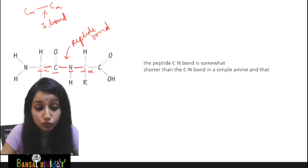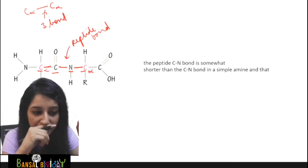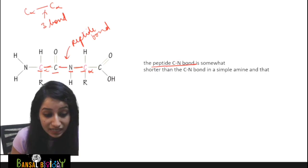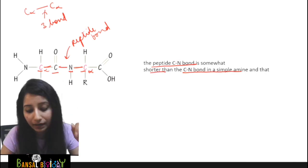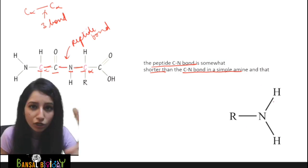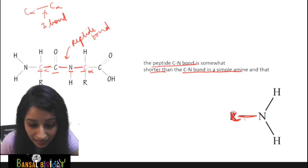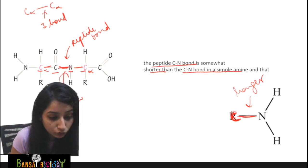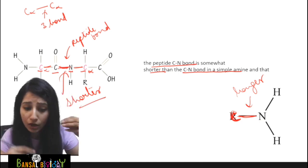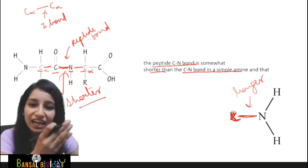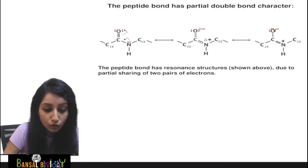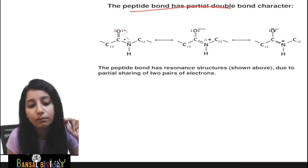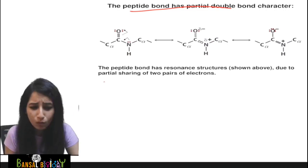First, let's see something else that is very important. When scientists were working on amino acids and peptides, they observed a very important point: the peptide bond present between C and N is somewhat shorter than the C-N bond in a simple amine. What did they observe? In a simple amine the C-N bond is longer, whereas the peptide bond is shorter. Scientists were shocked — how did that happen?